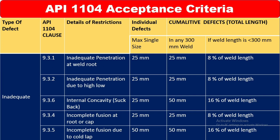What is the restriction? Inadequate penetration at weld root — that is not sufficient penetration. So what is the acceptance criteria for individual defects? The maximum single size is 25 mm. And if you see cumulative defects, the total length in any 300 mm weld is 25 mm. But if it is less than 300 mm, that is 8% of the weld length. This is the acceptance criteria for clause 9.3.1.